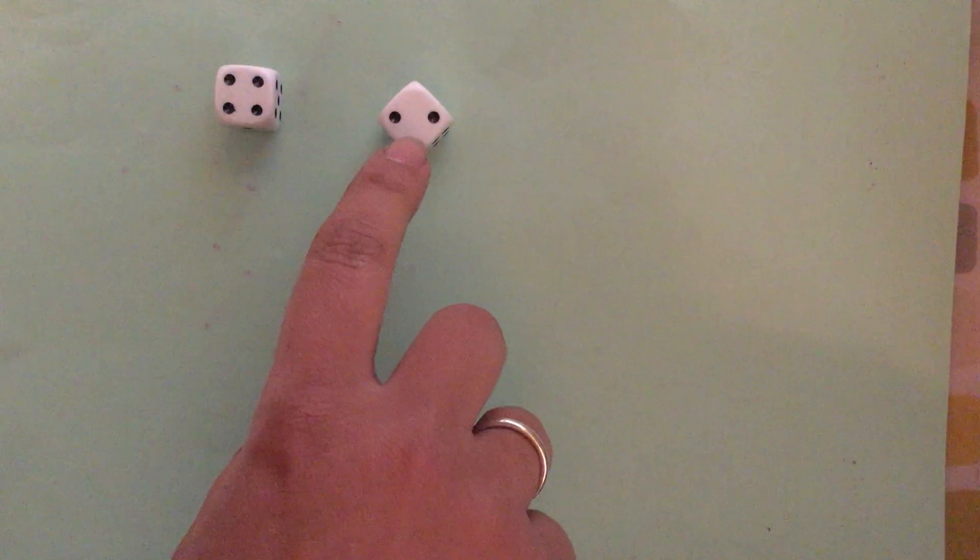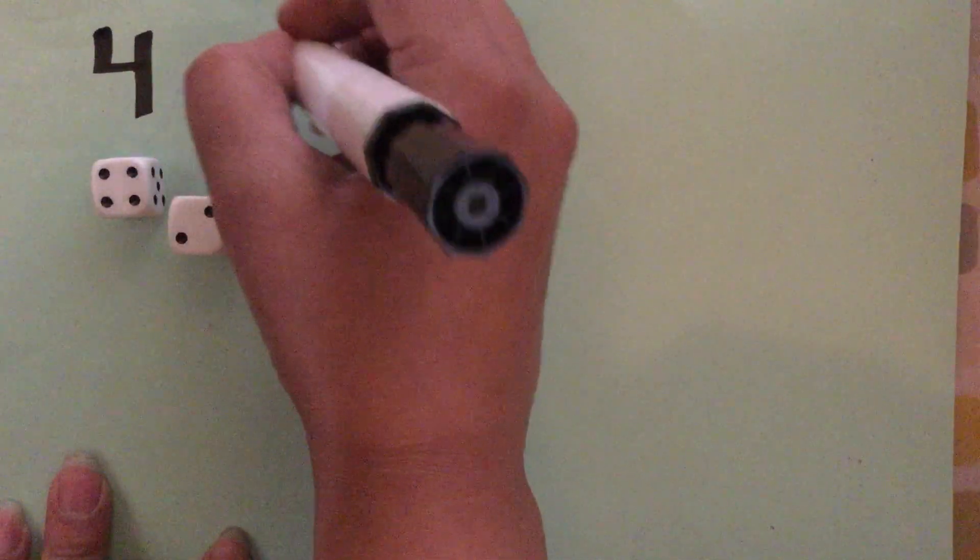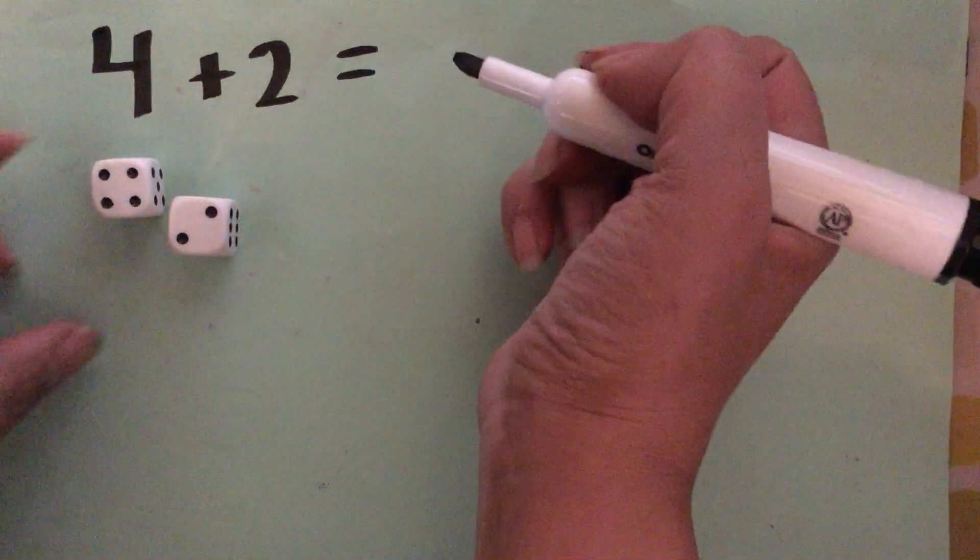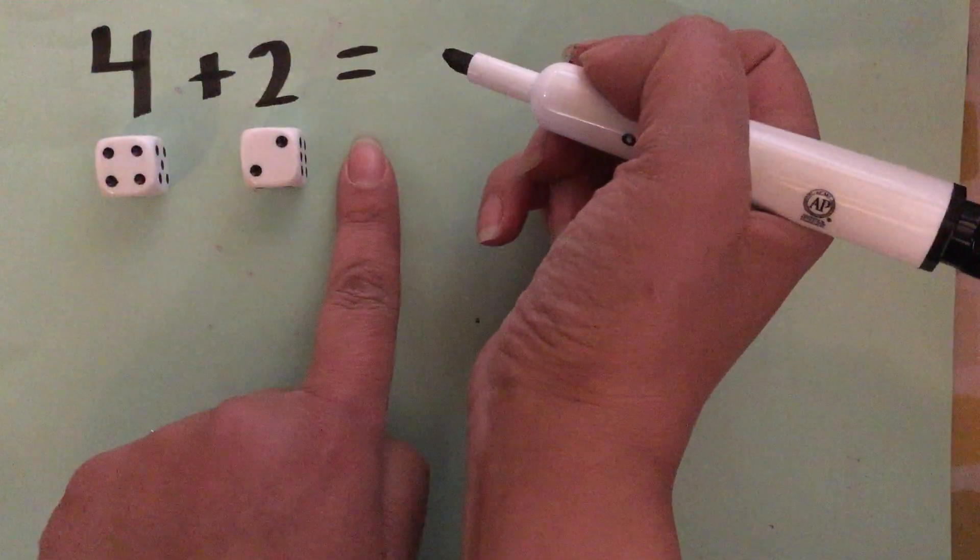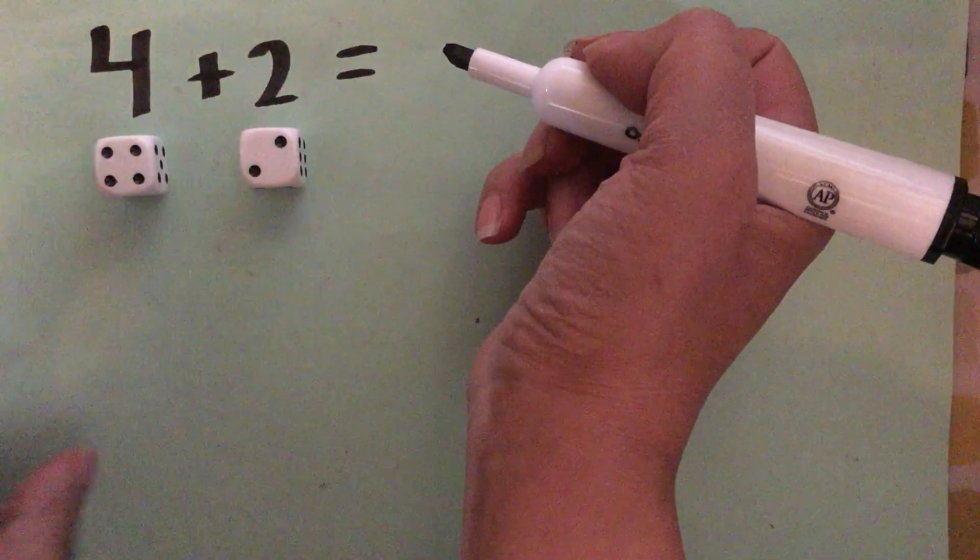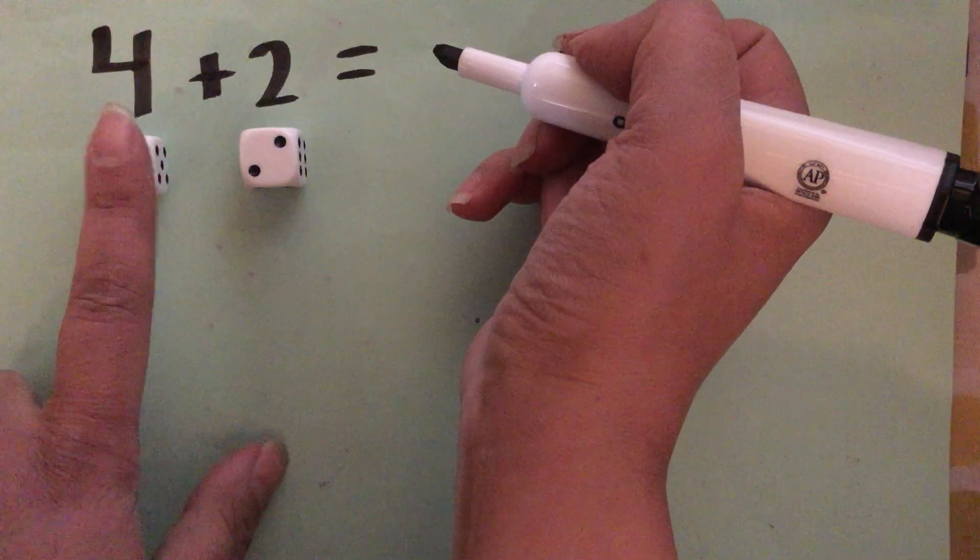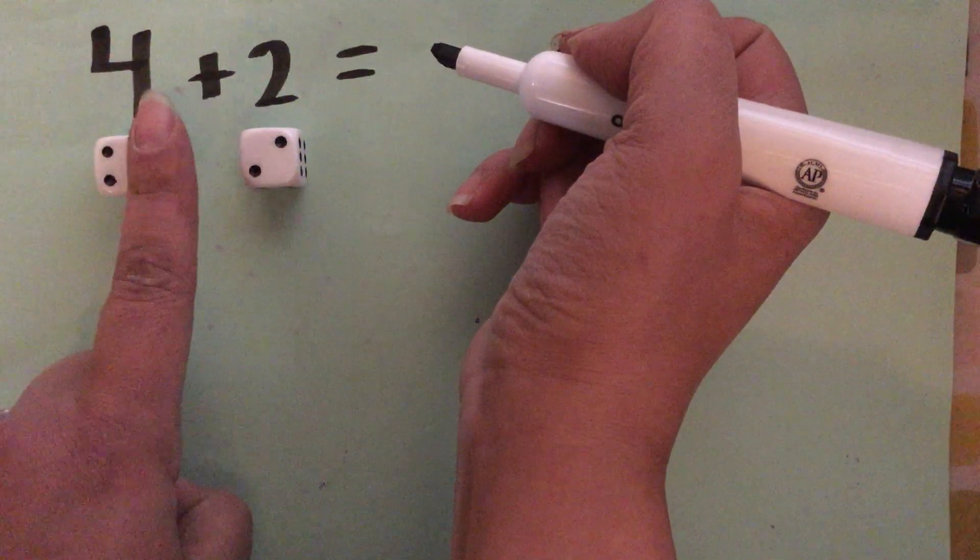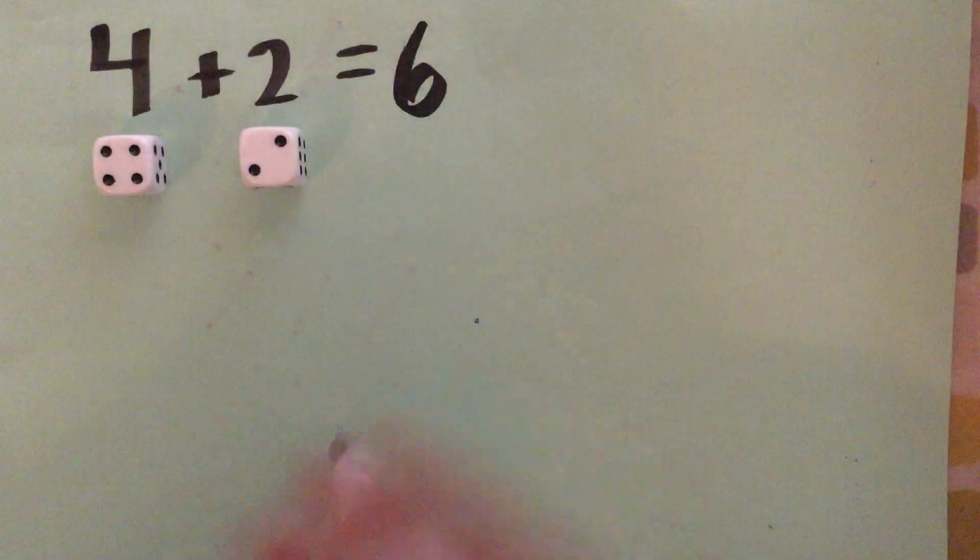And this one has two. One, two. I'm gonna add them together starting with the big number and I'm gonna write a number sentence to match. Four plus two equals... To make it easier I'm gonna start with the big number and count on. So say four, five, six. Four plus two equals six.